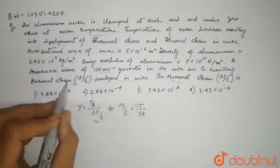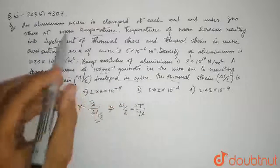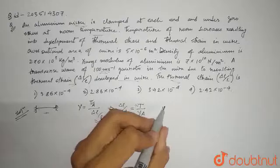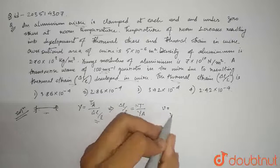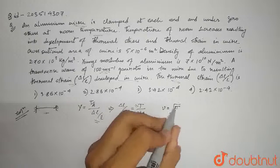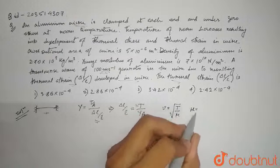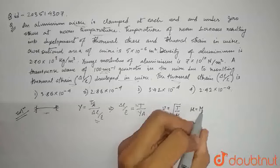The speed of a transverse wave in the string and wire, the formula that we know is V is equal to root over T by mu, where mu is the linear mass density M by L.